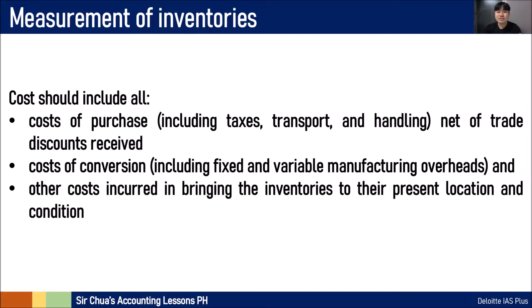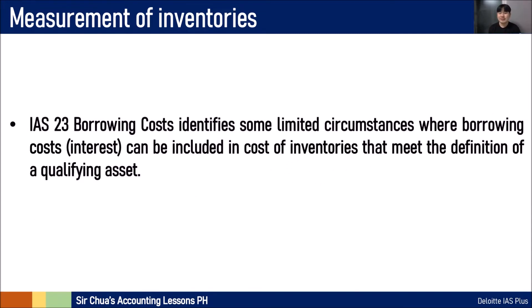The cost of an inventory should include the following: the cost of purchase, including taxes, transport, and handling, net of trade discounts received. Any cost of conversion, including fixed and variable manufacturing overheads — that is also part of the cost of inventory. We need to determine how much to present these inventories in our financial statements. And other costs incurred in bringing the inventories to their present location and condition — the best example being freight-in, or transportation cost. IAS-23 identifies some limited circumstances where borrowing costs can be included in the cost of inventories that meet the definition of a qualifying asset, but we will discuss that when we reach IAS-23.